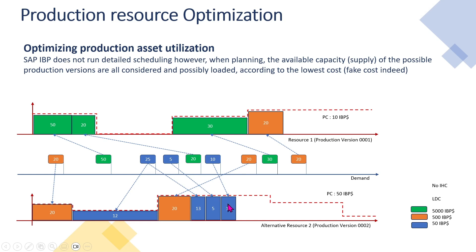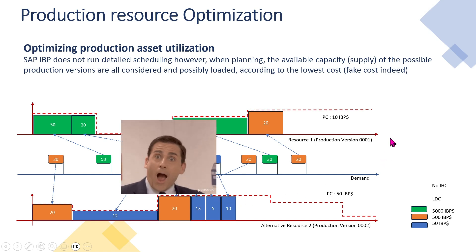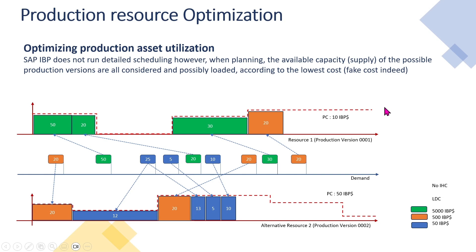So this is a typical case where we have a nicely and smoothly loaded production resource, main and alternative, according to the demand and the different penalties. Obviously this works for two resources, but it can work for three, four, five, or whatever number of resources you have. The challenge here is to maintain all these costs in order to have the desired behavior of the optimizer concerning production resource optimization.